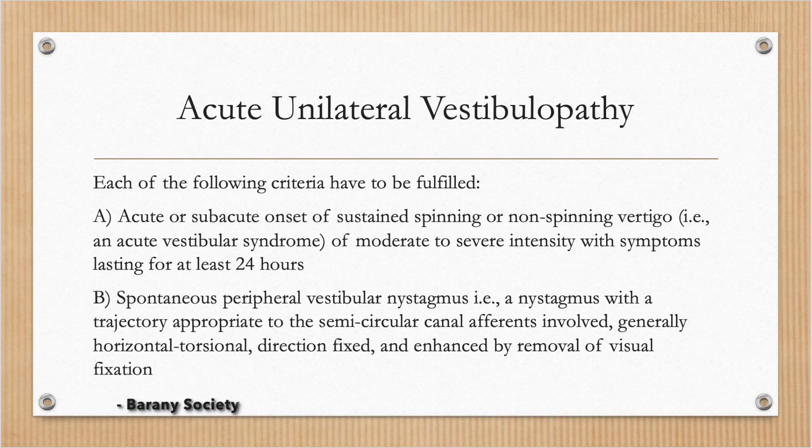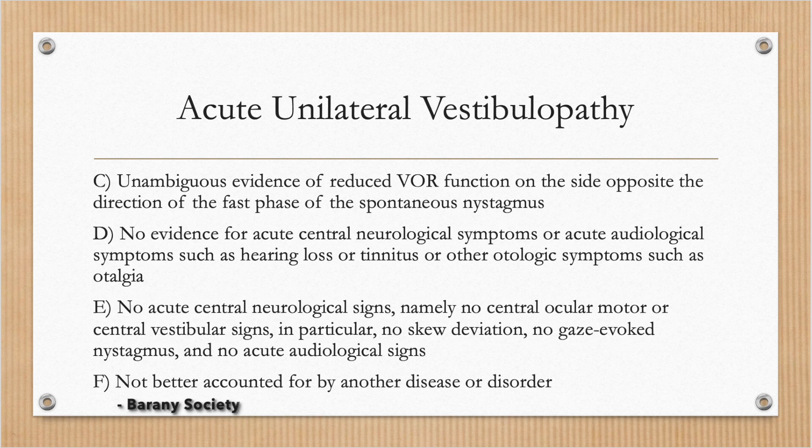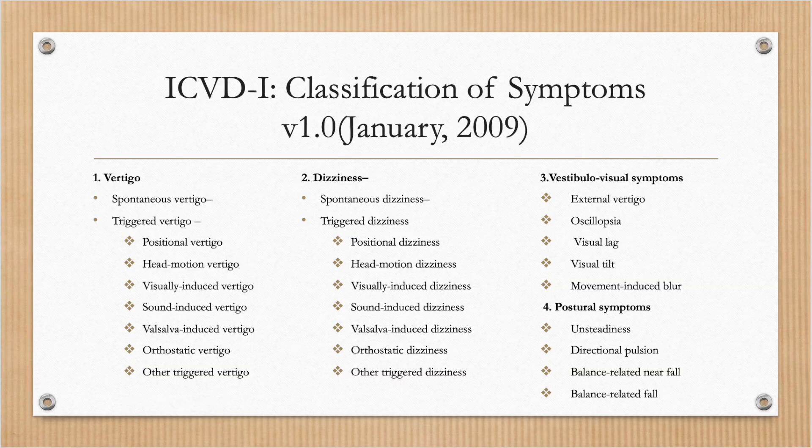Sudden onset of severe rotatory vertigo lasting two to three days with ear symptoms could be due to acute labyrinthine failure; without ear symptoms but with severe vomiting it could be vestibular neuritis. The second category is balance disorder patients, which is different from those with rotatory spinning. These imbalanced patients are mostly due to unilateral or bilateral vestibulopathy, functional dizziness, extrapyramidal disorders like drug-induced parkinsonism, multi-system atrophy, or age-related neurodegenerative conditions like cerebellar ataxia.